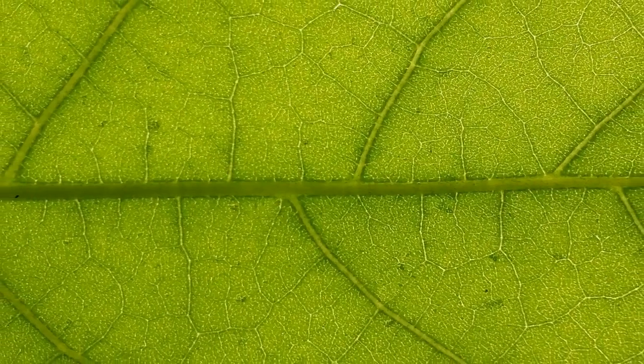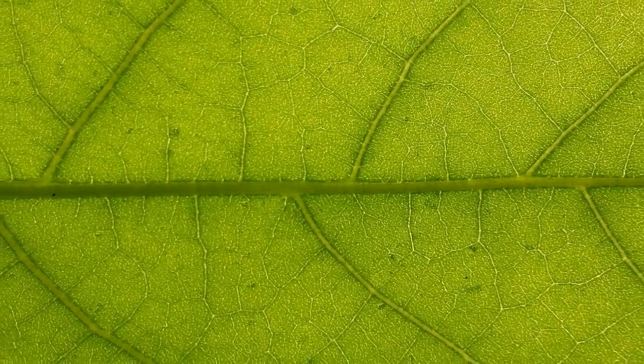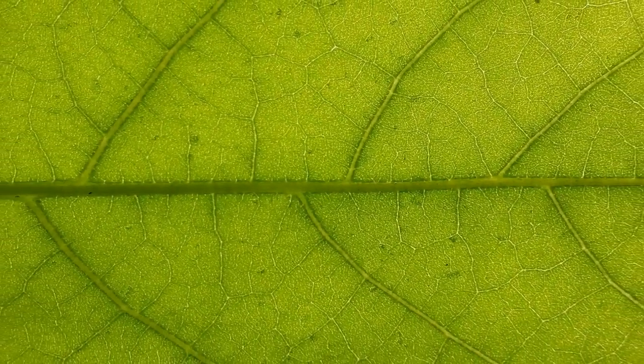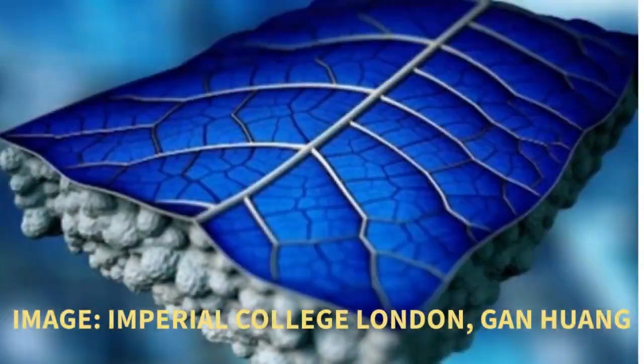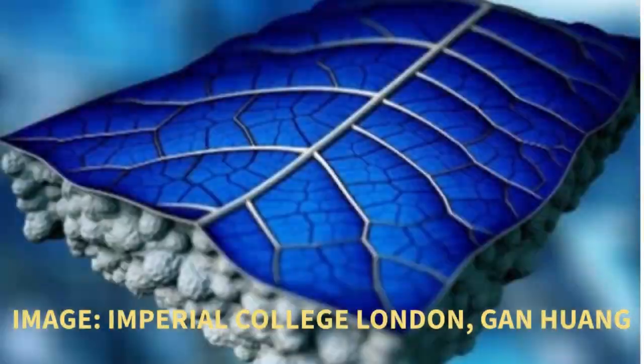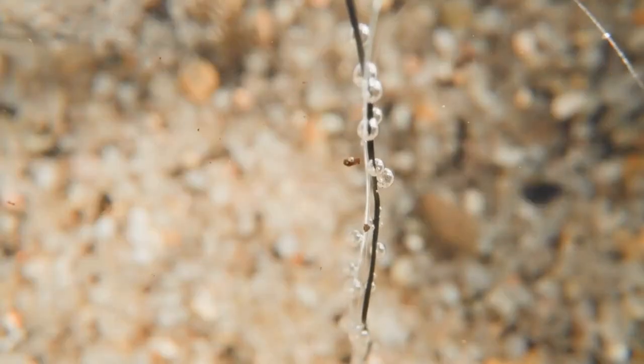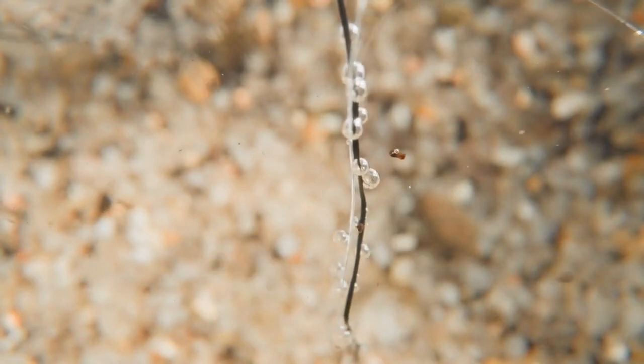The PV leaf is a marvel of biomimicry, drawing inspiration from the natural processes of transpiration in plants. A thin biomimetic transpiration layer, just one millimeter thick, mimics the water-carrying capabilities of plant tissues.